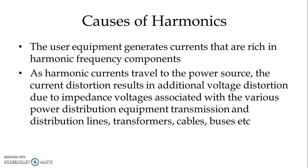As harmonic currents travel to the power source, the current distortion results in additional voltage distortion due to impedance voltage associated with the various power distribution equipment like transmission and distribution lines, transformers, cables, buses, etc. This is known as current distortion transformed into voltage distortion — injected current harmonics. Most of the harmonics are from the load side; currents rich in harmonic components are injected into the power system and through various impedances are transformed into voltage distortion.